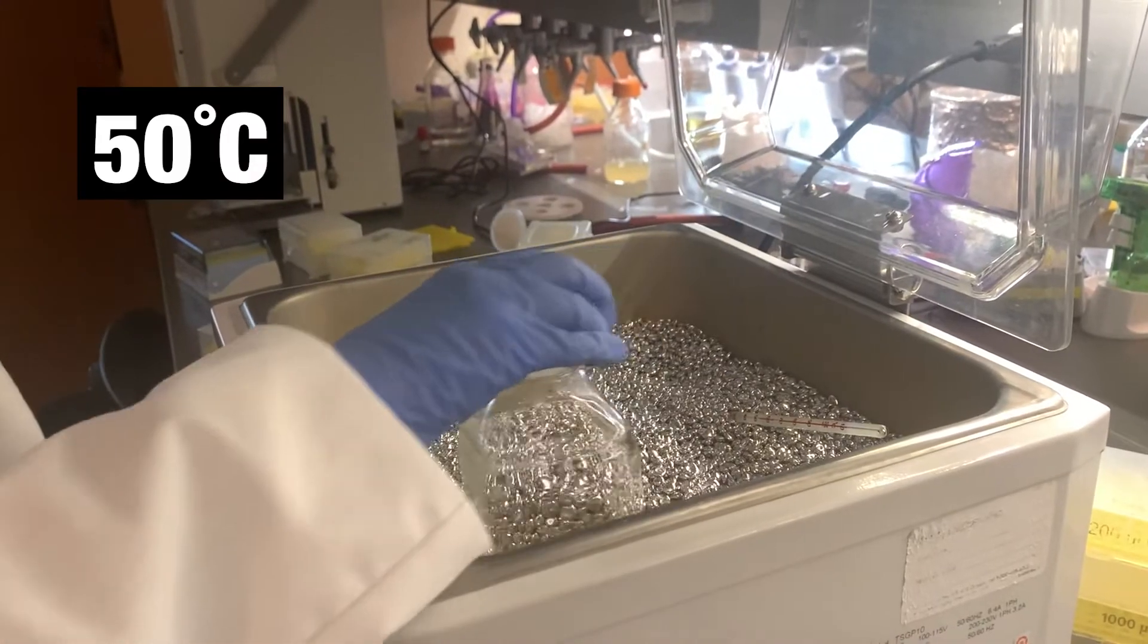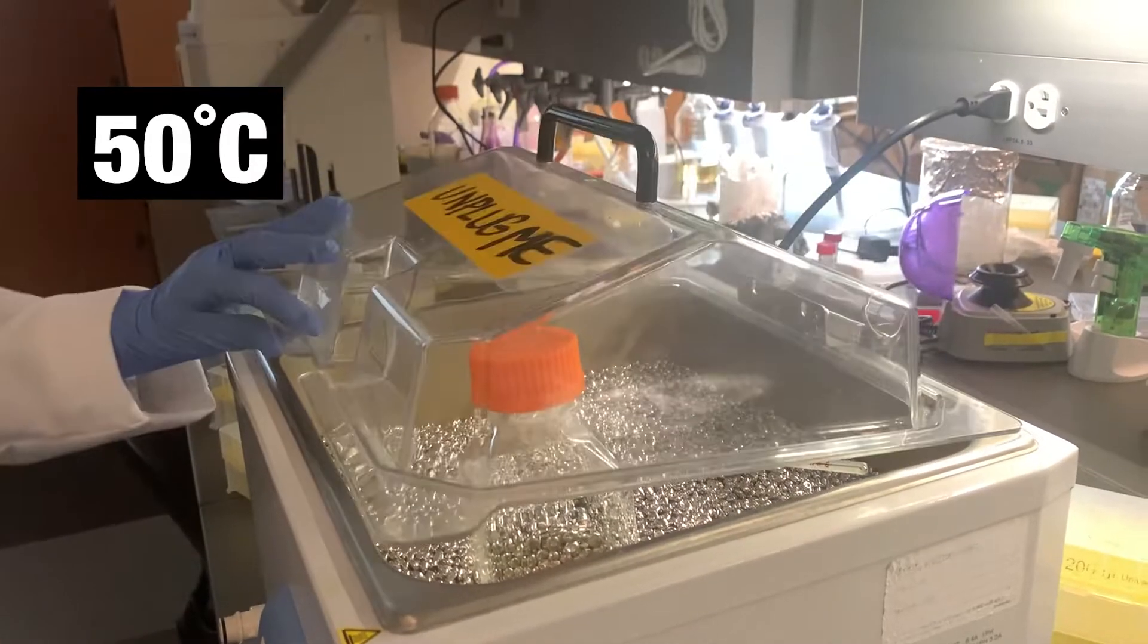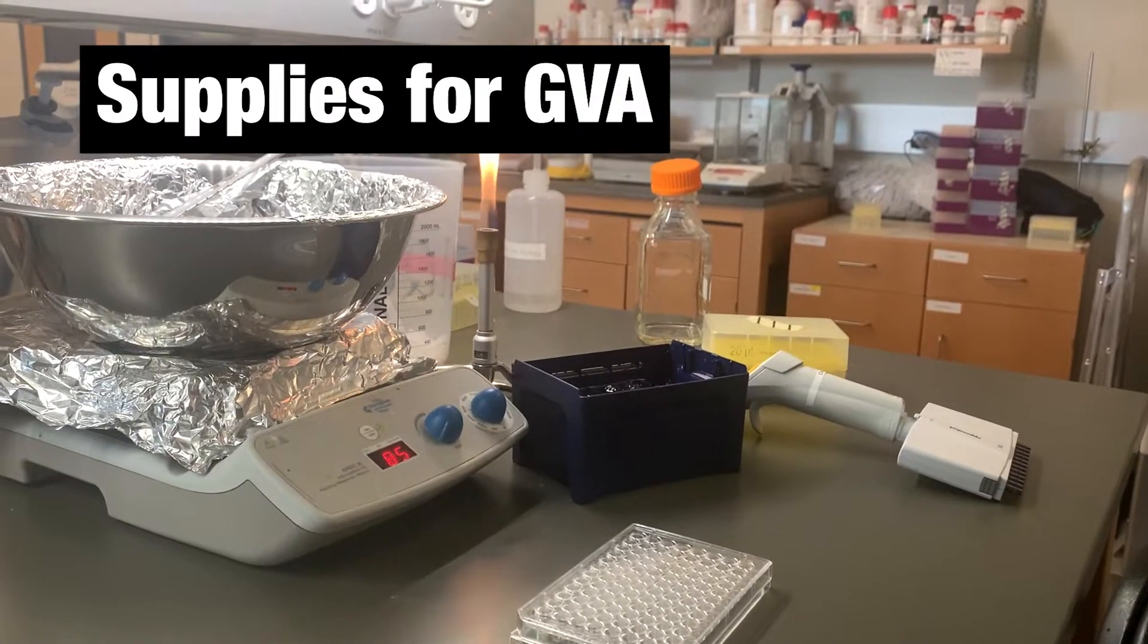A microwave on low power may be used. After melting the agar, leave it in a 50 degree centigrade heat bath while preparing your experimental samples and gathering supplies for GVA.